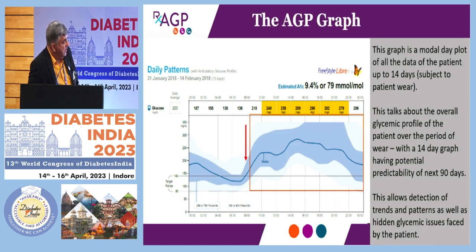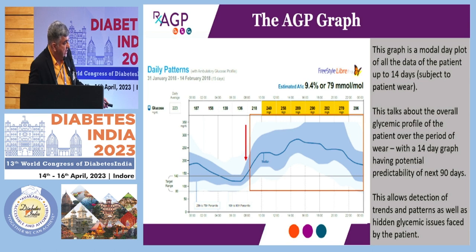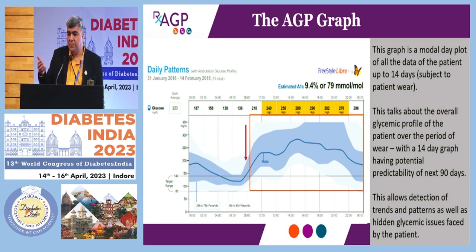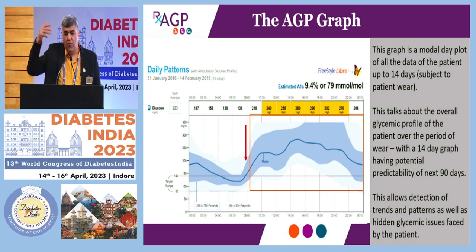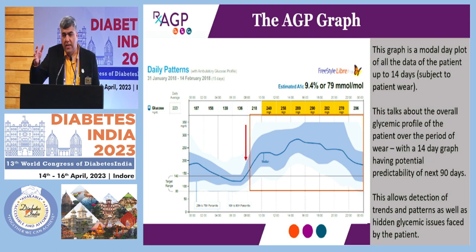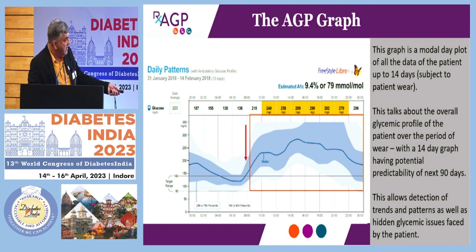This is a model day plot — your typical AGP graph. This talks about the overall glycemic profile for the 14-day period and it allows the detection of trends as well as hidden glycemic issues. We can see whether the patient has had hypos on particular days, or sudden spikes post-breakfast or even after tea and biscuits — something extremely interesting in Indian patients. What kind of graph do we want? We want a nice thin snake. What we don't want to see is a python who's just had a meal — these broad graphs showing food passing from one end to the other.